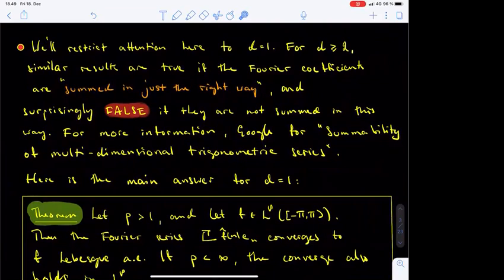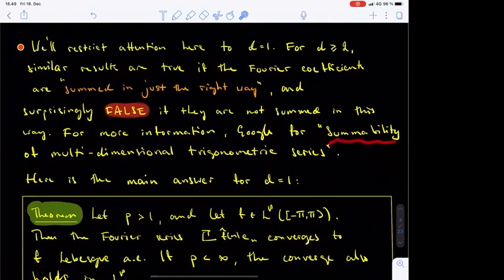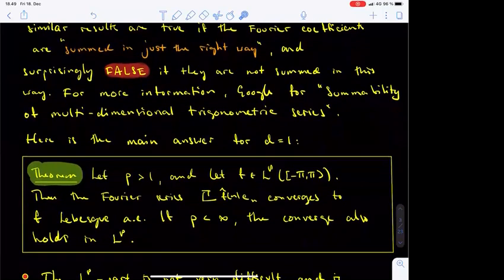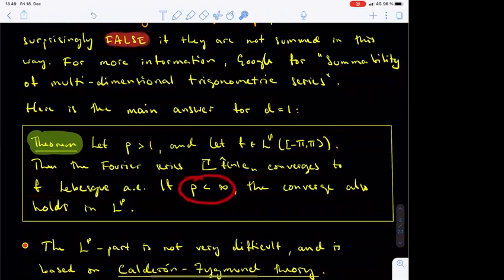Next, we will state a deeper result on the subjects of LP and pointwise convergence, restricting attention to the case of ambient dimension d equal to 1. In higher dimensions, things get even more complicated; results like the one we are about to see are still true, but only if the Fourier coefficients are summed in exactly the right order. Here is the one-dimensional result: let p be an exponent strictly bigger than 1, and let f be a 2π-periodic LP function on the real line. Then the Fourier series of f converges to f almost everywhere. Furthermore, if the exponent p is strictly less than infinity, then the convergence also holds in the LP norm.